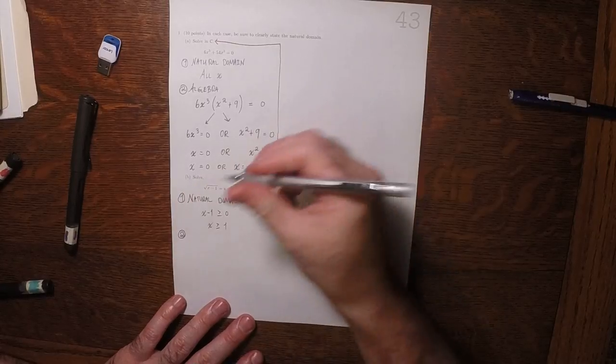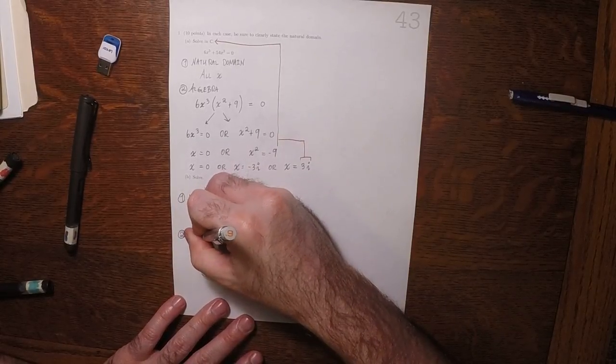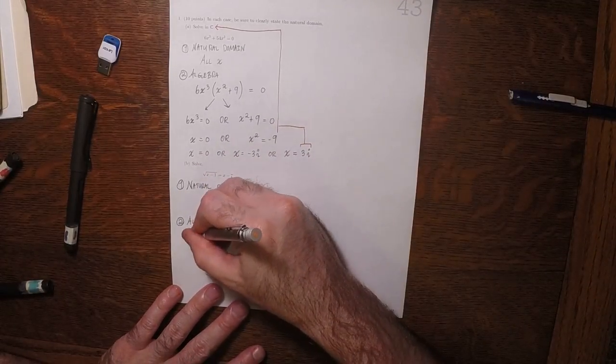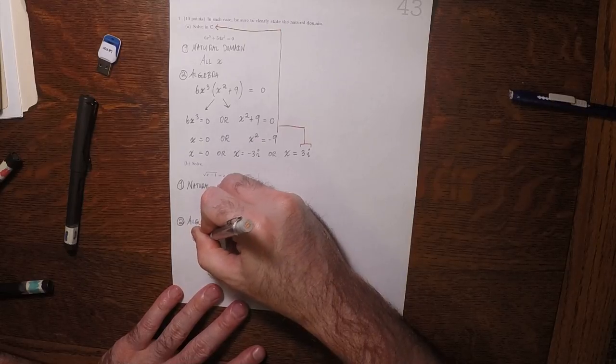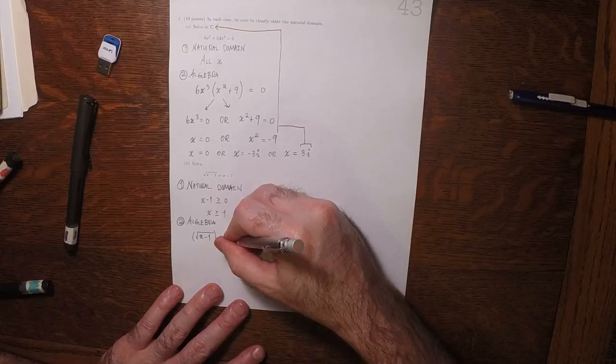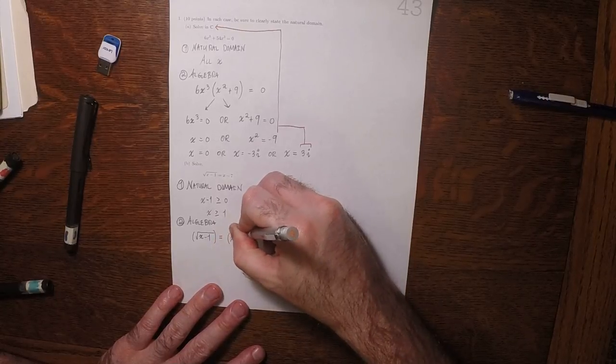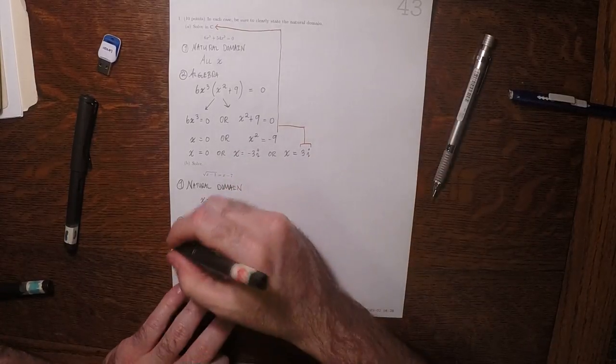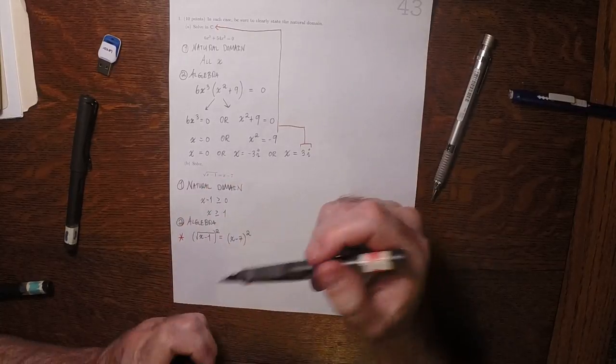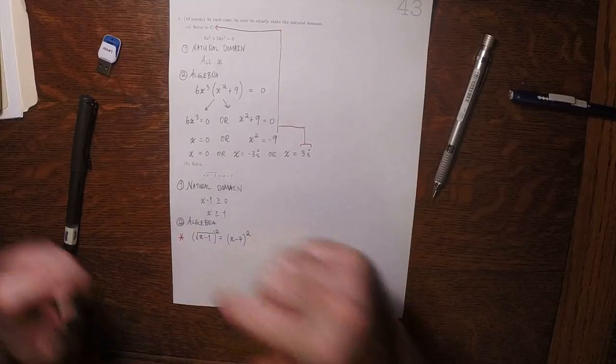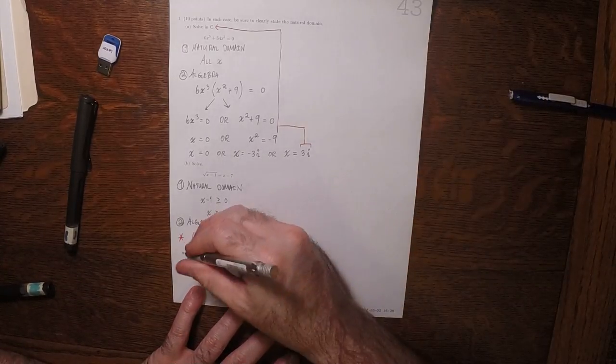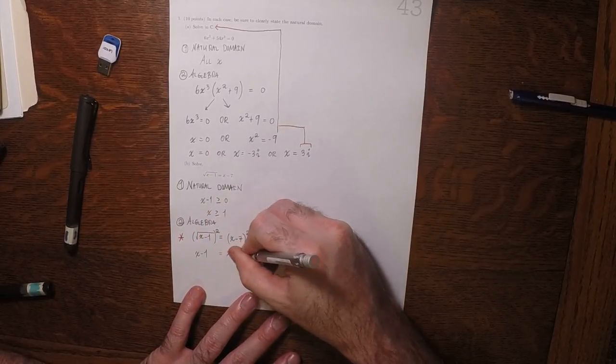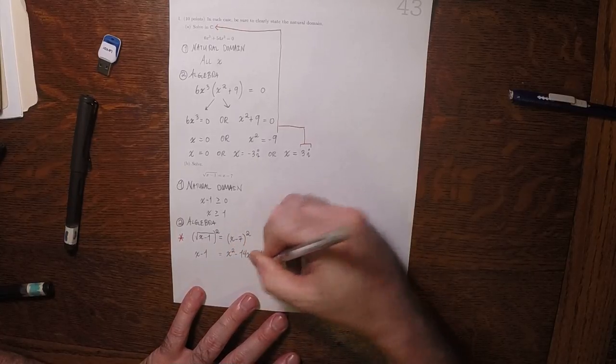For part 2, to do some algebraic steps, we can square both sides. We have to square both sides because we've got to get the x's out of that radical. But because squaring both sides is not truth-preserving, we're going to have to come back and check all of our answers.